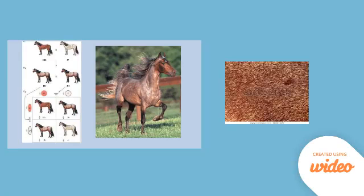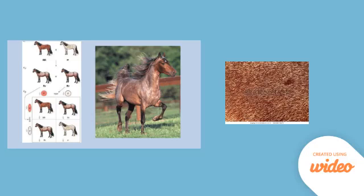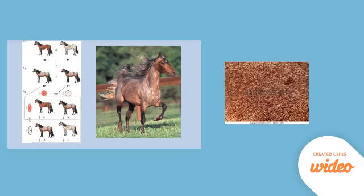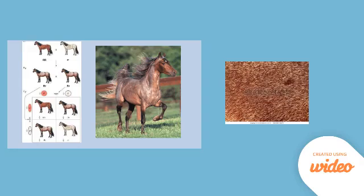One last thing to note is that codominance can also occur on small scales. If you look at this picture, you can see the parents at the top left — one looks red and one looks a bit white. The offspring shown looks like an intermediate, but if we zoom in and observe the hairs closely, we can see that each individual strand actually has its own distinct color. It's a mix of white and red hairs, but they aren't blended into one color.